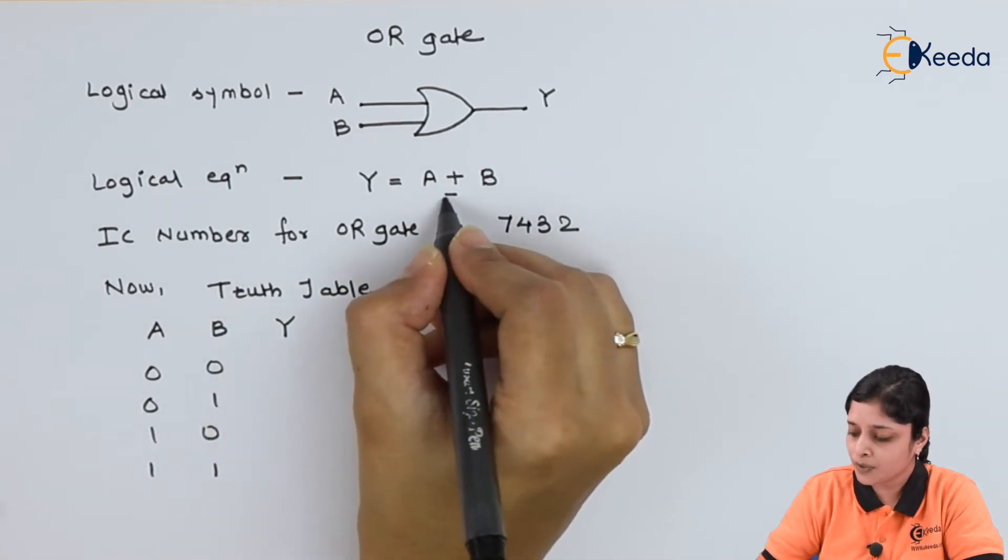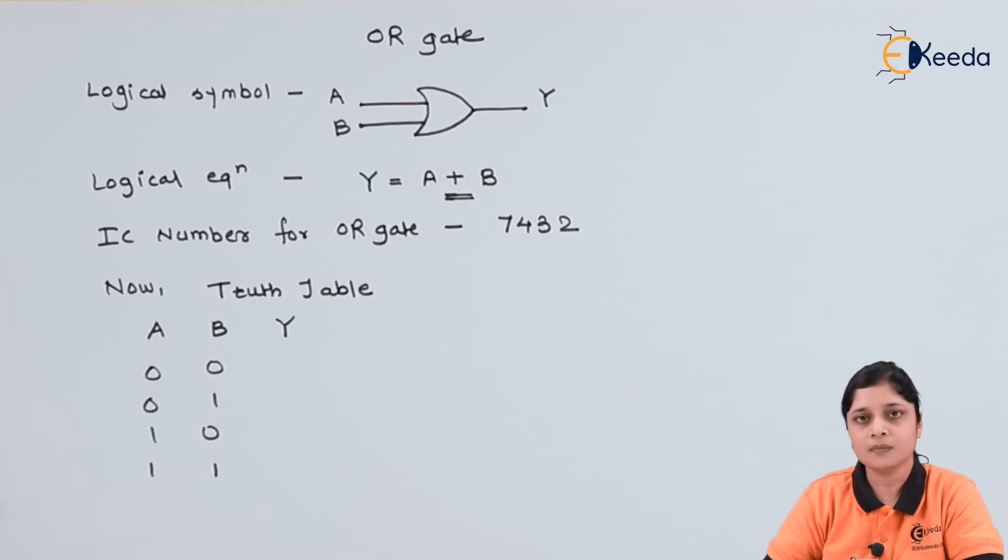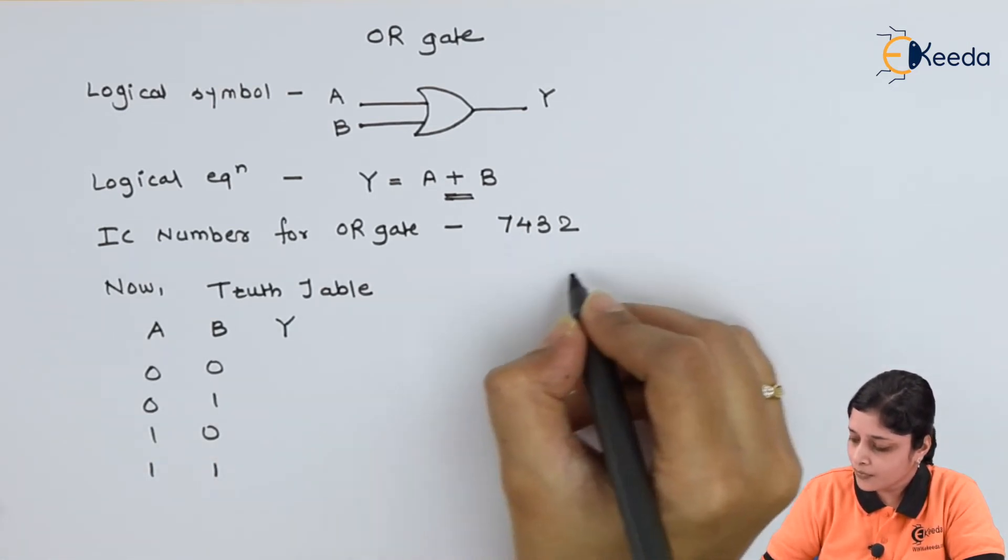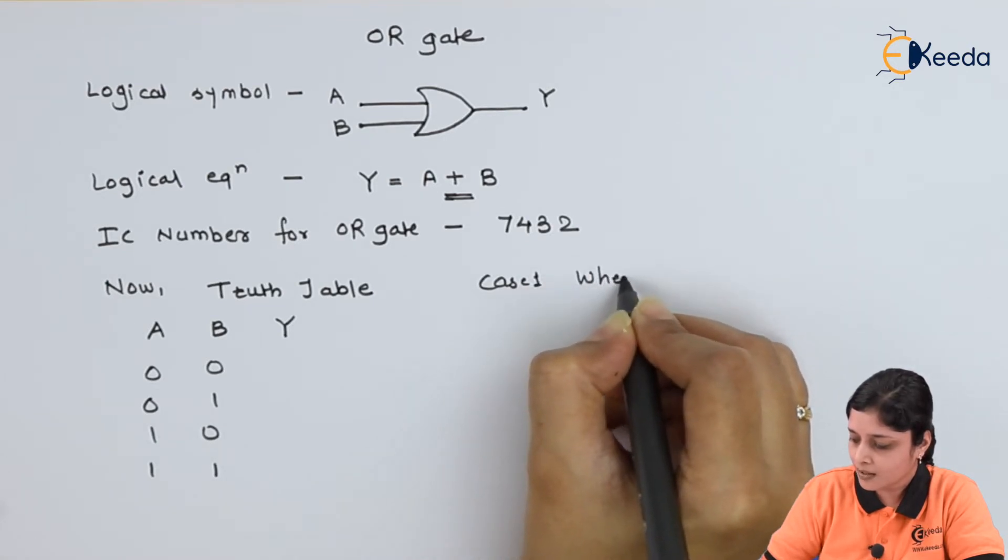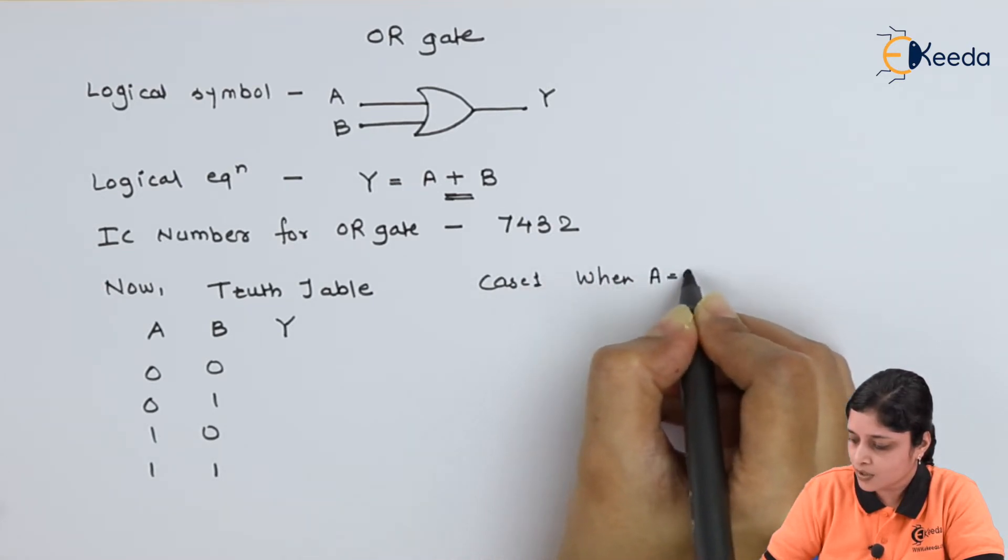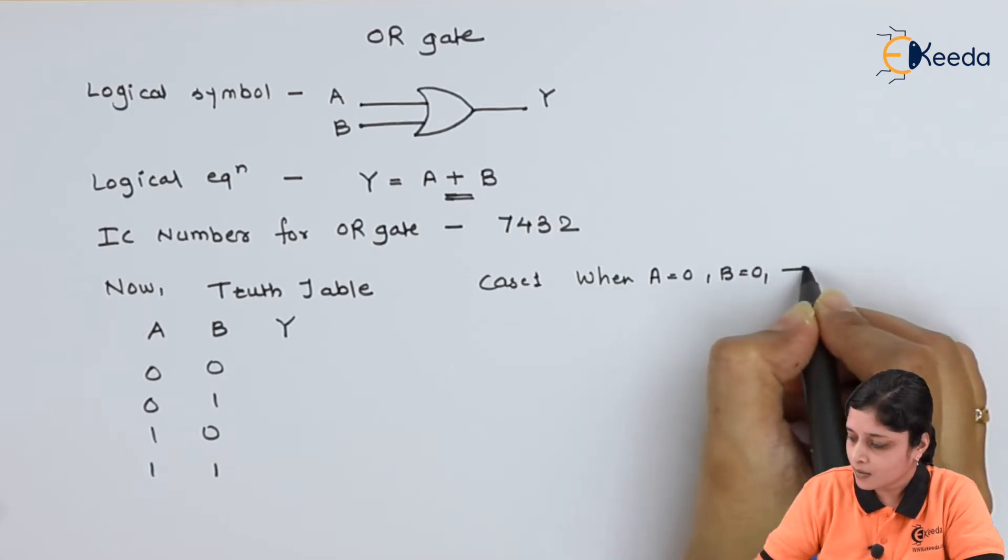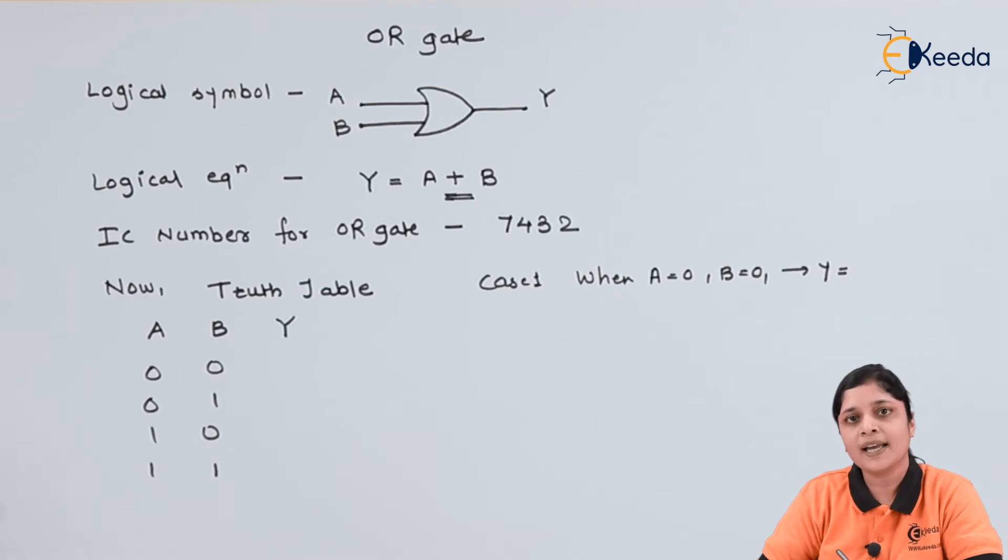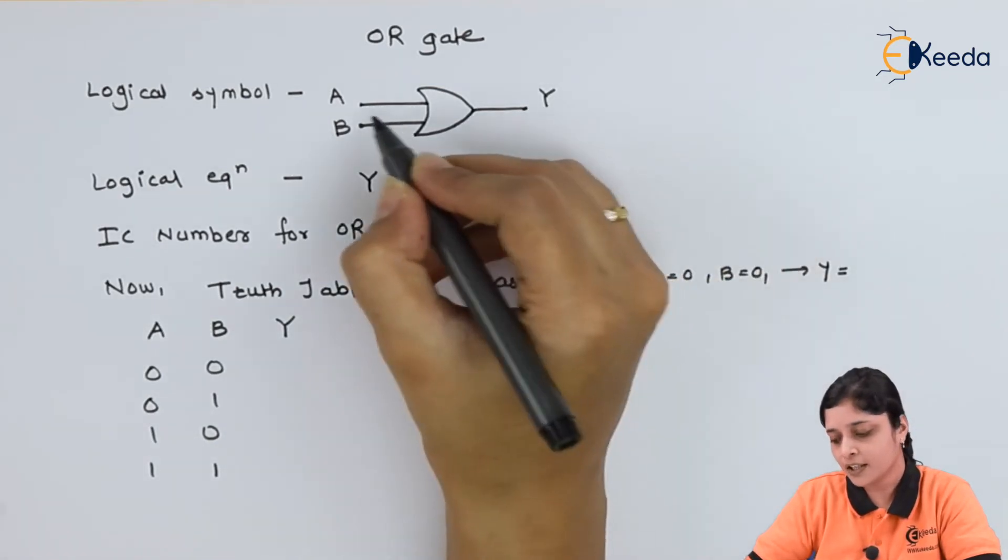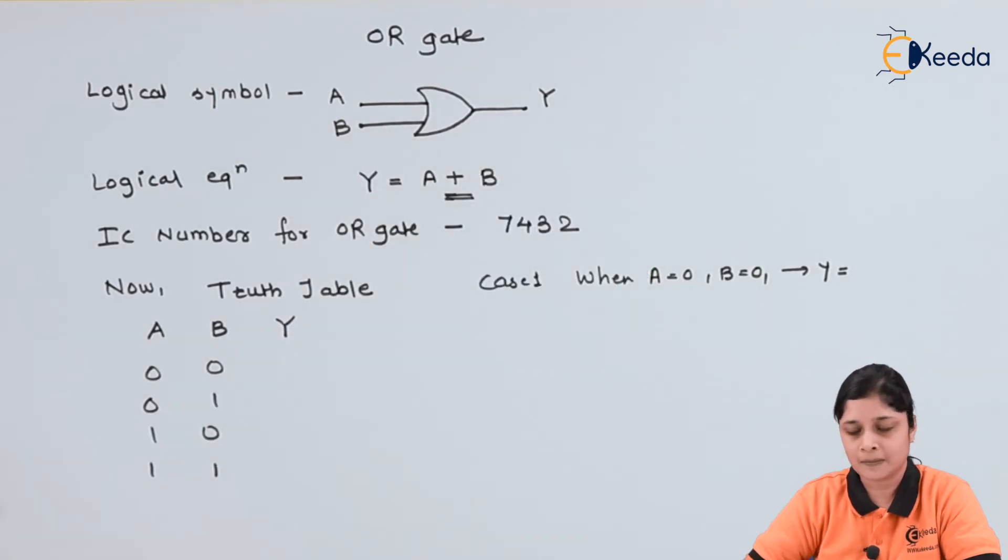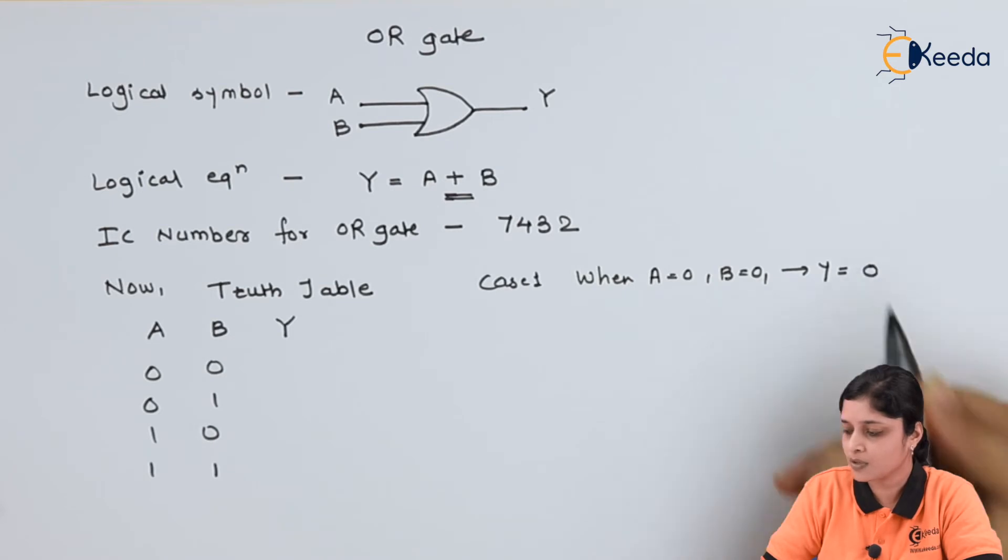Now we have to perform the logical addition. We will discuss case 1. When A equals to 0, B equals to 0, what you will get as Y? Y is the output, we have denoted output by Y and inputs by A and B. So 0 logical addition 0 will give you 0.